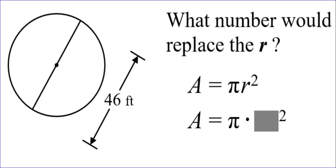One more problem. What number would replace the r in the formula for the area of a circle, which you could find on Pennsylvania's formula sheet? A equals pi times radius squared. R is radius. Did they give us the value of the radius?